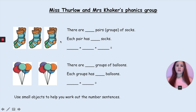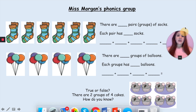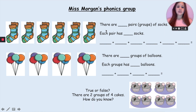Now it is your turn. There are something pairs — pairs means groups of two — of socks. Each pair has something socks, then write your number sentence. There are something groups of balloons and each group has something balloons, and write your number sentences. Remember you can use small objects to help you if you're struggling to count in twos, fives and tens. This is your activity if you are in Miss Thurlow and Mrs Coker's phonics group.